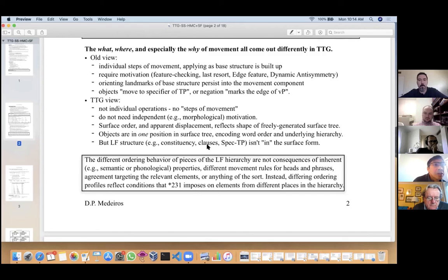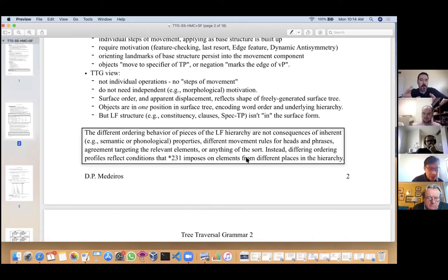Most importantly here, the different ordering behavior of different syntactic categories, different pieces of the LF hierarchy, has nothing to do with their inherent properties—nothing to do with their semantics, their phonology, their morphological requirements. There's no different movement rules affecting heads or phrases, no agreement or probe-goal operation finding the closest thing to move. The different ordering profiles for different things simply reflect how the *231 condition restricts the possible surface position of different source positions in the hierarchy.